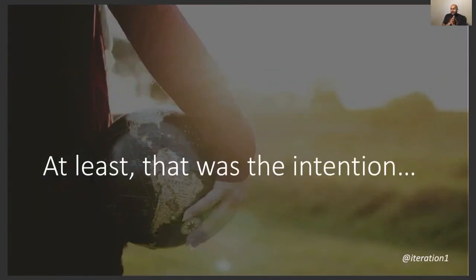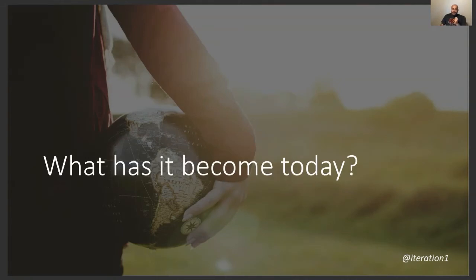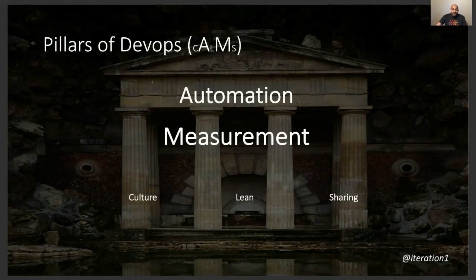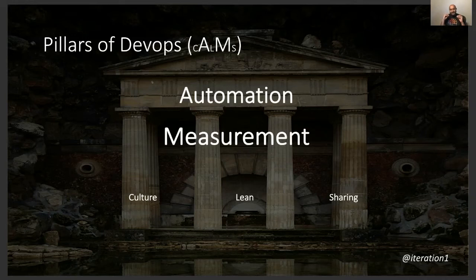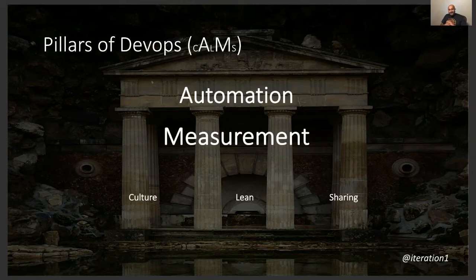Ten years ago when this was pitched, that was the intention and the mindset. But what has it really evolved to today? Out of the five pillars, it feels like automation and measurement are the two most primary things that everybody talks about when they say DevOps. You ask someone, 'Oh, you're a DevOps engineer, what do you do?' — 'I work on automation, I use Puppet or Terraform.' Or they say they're heavily into measuring all the things. So out of the five pillars, automation and measurement have definitely gone past culture, lean, and sharing.